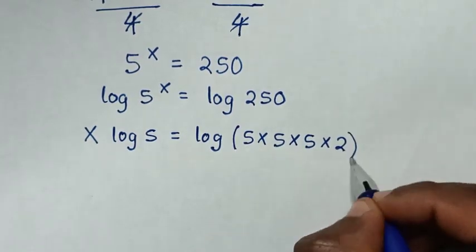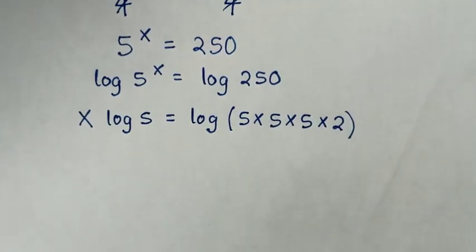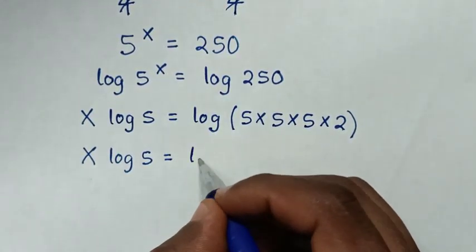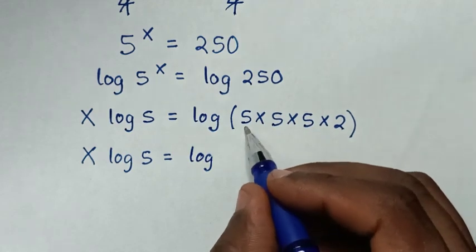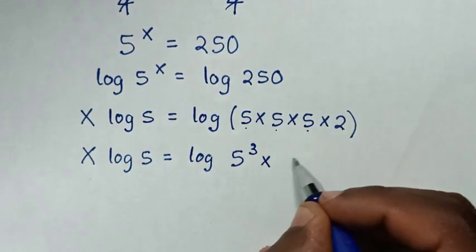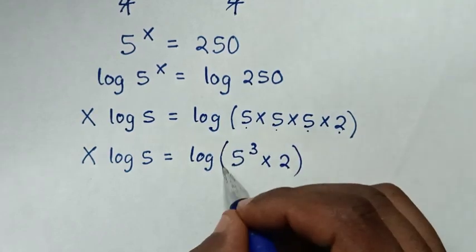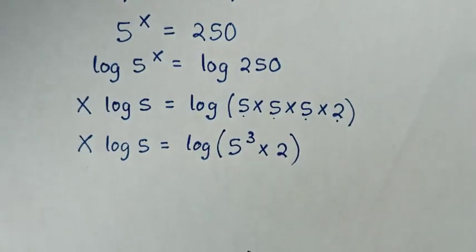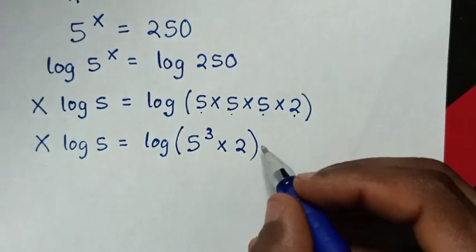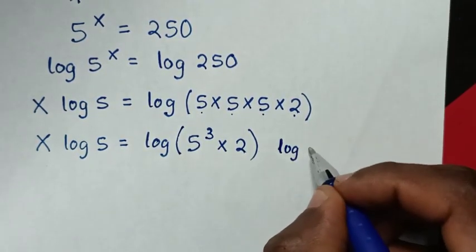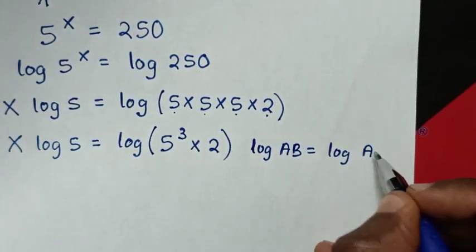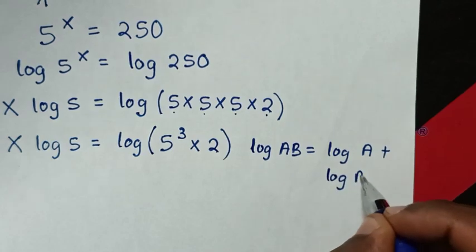So it will be x log of 5 is equal to log of 5 times 5 times 5, which is 5 power 3, then times 2. From here, log of 5 times 5 times 5 times 2 is in the form of log of a times b is equal to log of a plus log of b.